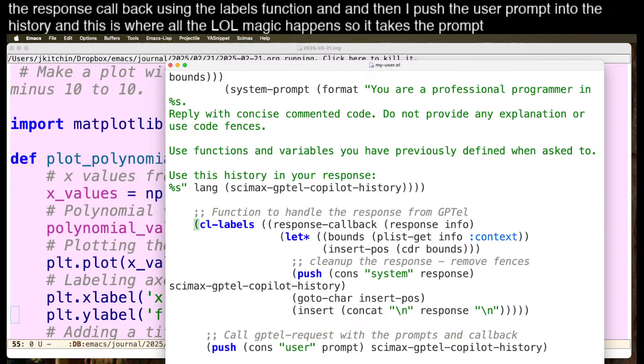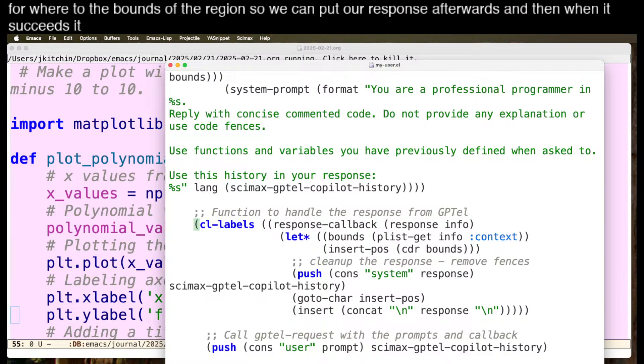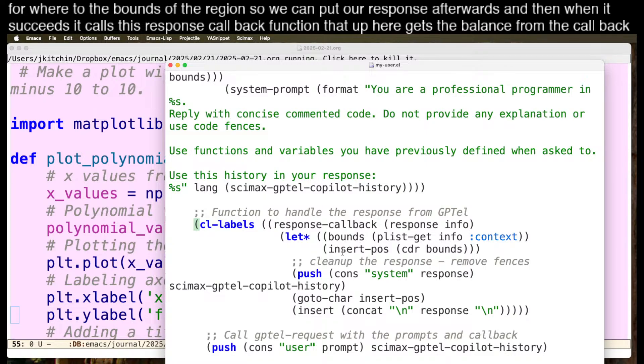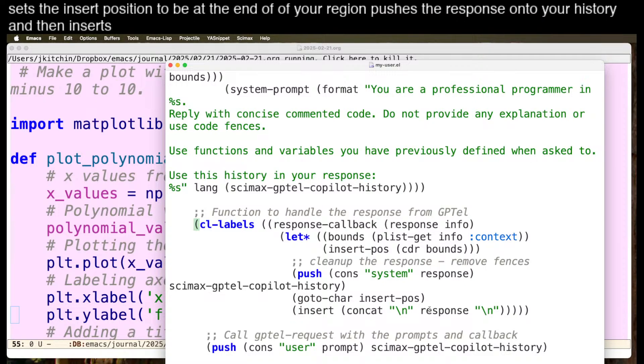And this is where all the LLM magic happens. So it takes the prompt, provides context for the bounds of the region so we can put our response afterwards. And then when it succeeds, it calls this response callback function that up here gets the bounds from the callback, sets the insert position to be at the end of your region, pushes the response onto your history, and then inserts the response in the buffer. Nothing fancy there.